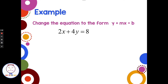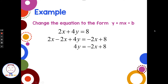So let's say we're given the equation 2x plus 4y equals 8, and we're asked to change it to y equals mx plus b. I would start by subtracting 2x from each side. When I subtract 2x, I put the minus 2x right after the equal sign to get the x term in the right place. On the left side, subtracting 2x from 2x removes the x term, leaving 4y equals negative 2x plus 8, with y, x, and the constant all in the right places.